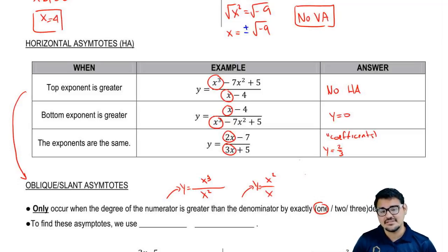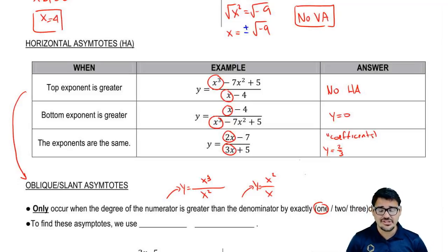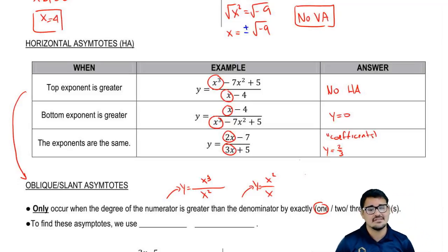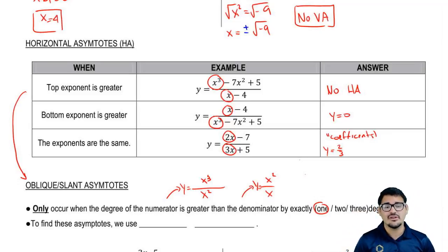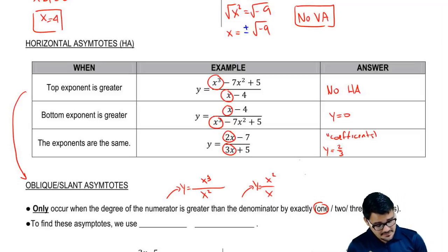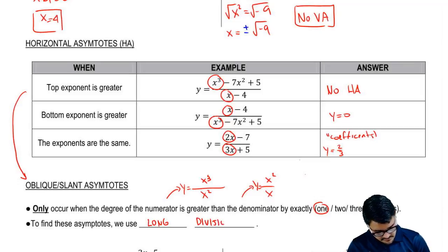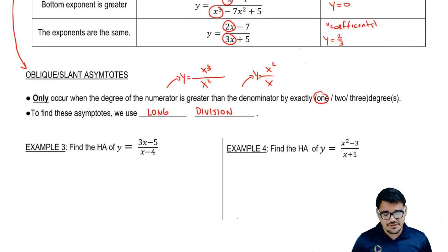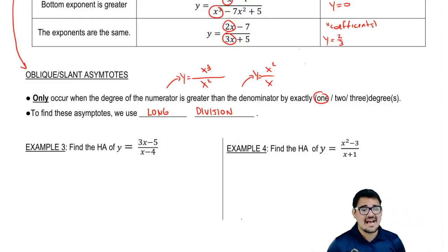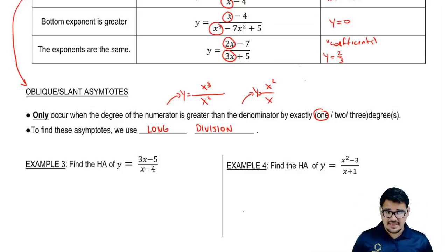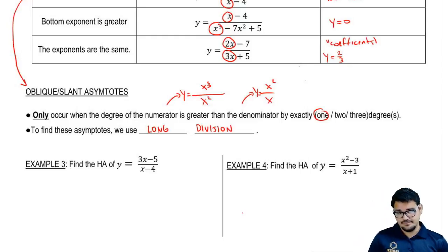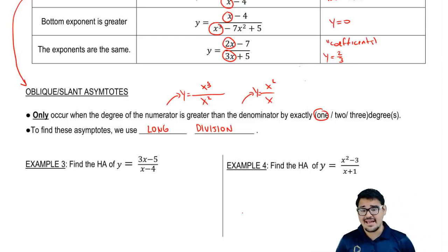So how do we find oblique asymptotes? Once we recognize the top is bigger than the bottom by exactly 1, we need to perform an operation to get the equation of the oblique asymptote. To find these asymptotes we need to use — I'm about to say a very painful word that will bring back some bad memories — long division. So let's get to it.